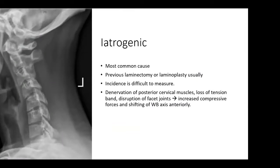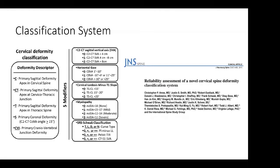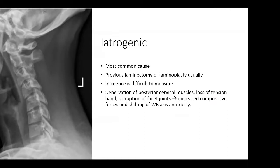In terms of iatrogenic causes, it's still the most common cause of cervical kyphotic deformity, usually occurring after a previous laminoplasty or laminectomy. The incidence is difficult to measure, but it's thought to be likely secondary to degeneration of the posterior cervical muscles, loss of the tension band inherent to posterior surgery, disruption of the facet joints, and shifting of the weight-bearing axis anteriorly. Patients with a baseline increased T1 slope are thought to be at increased risk.